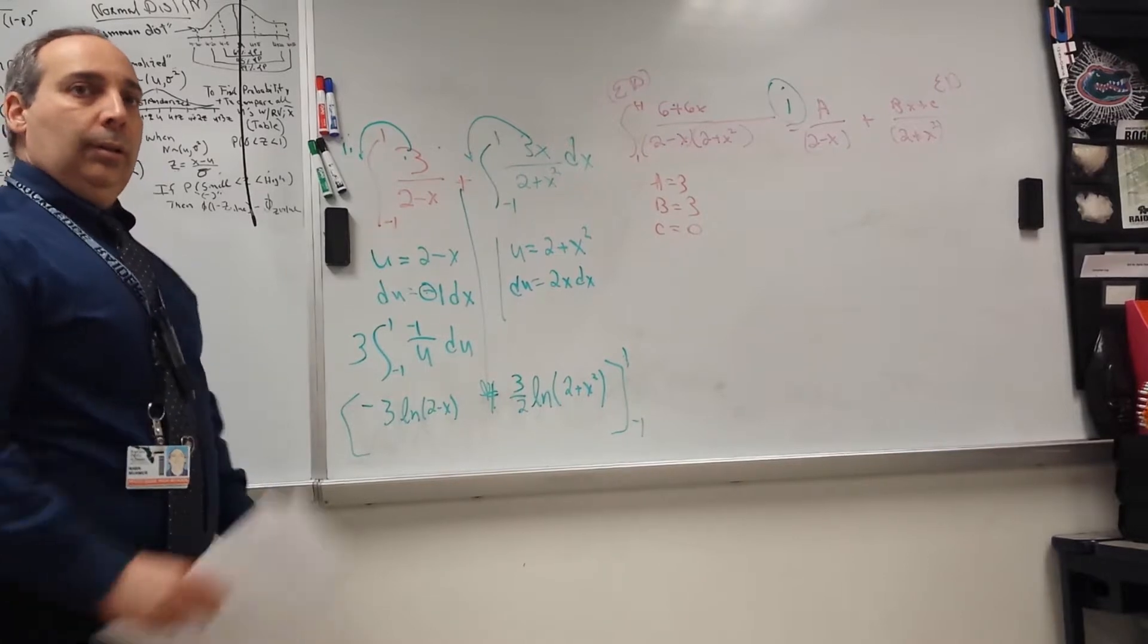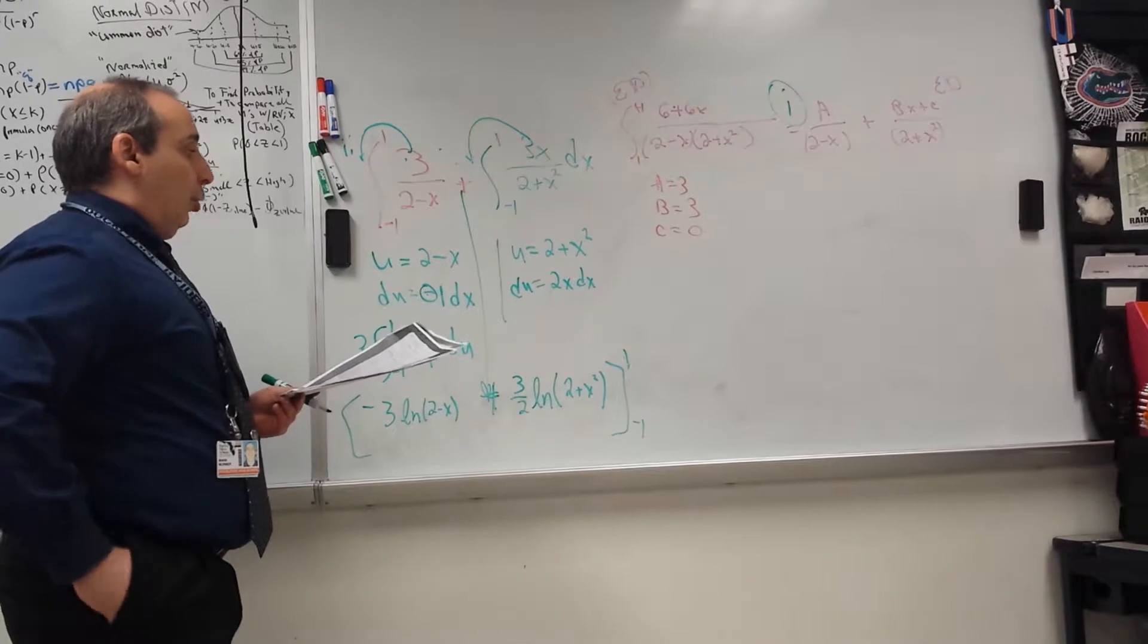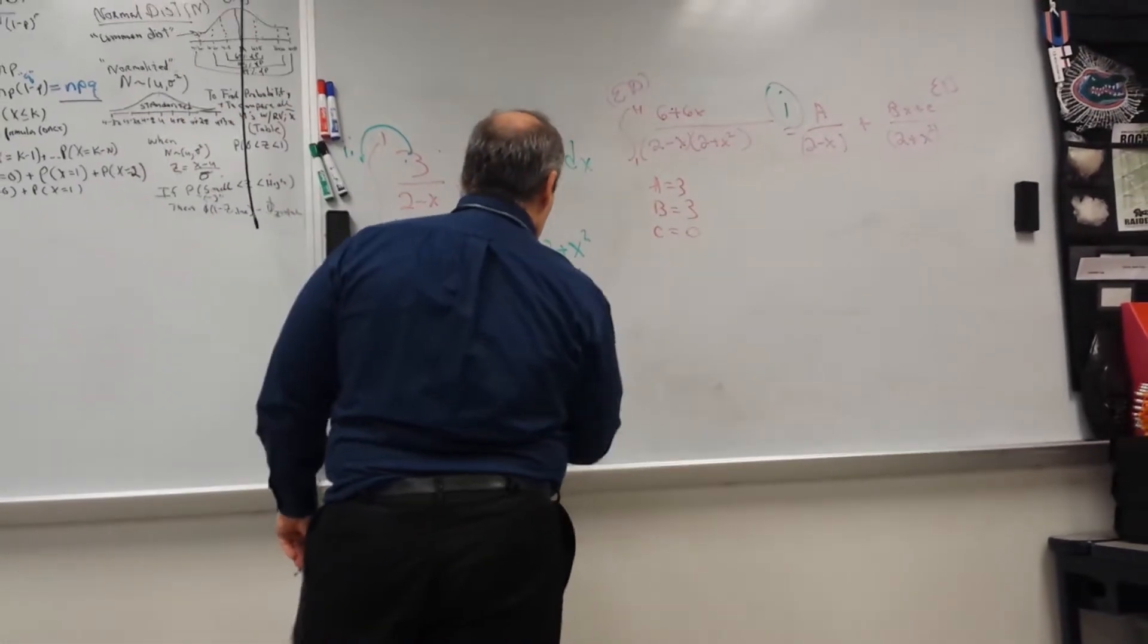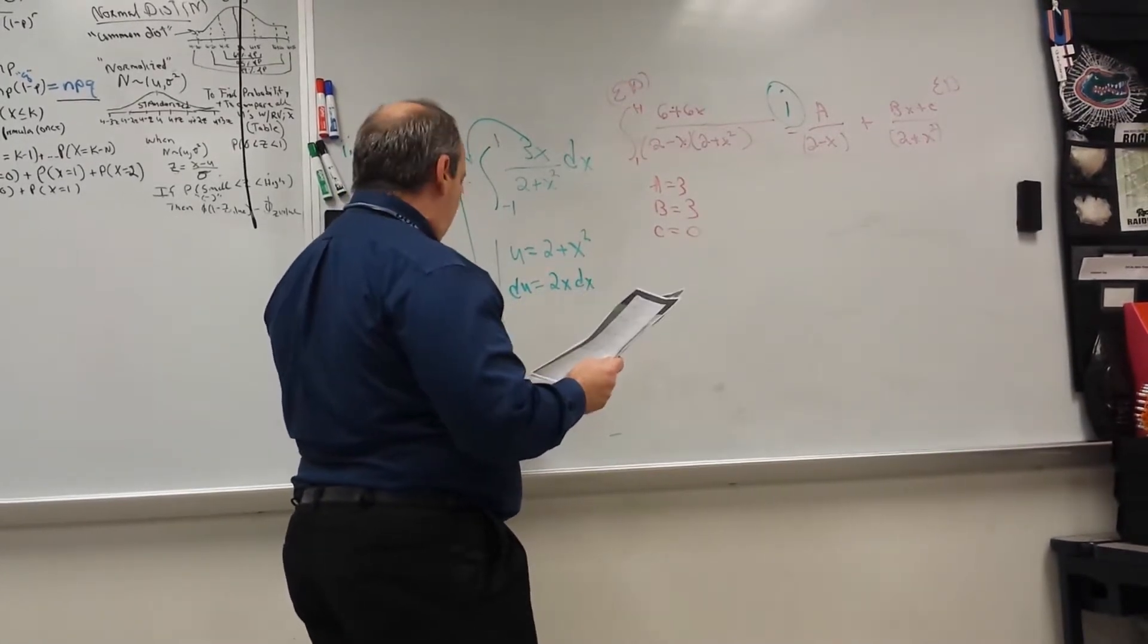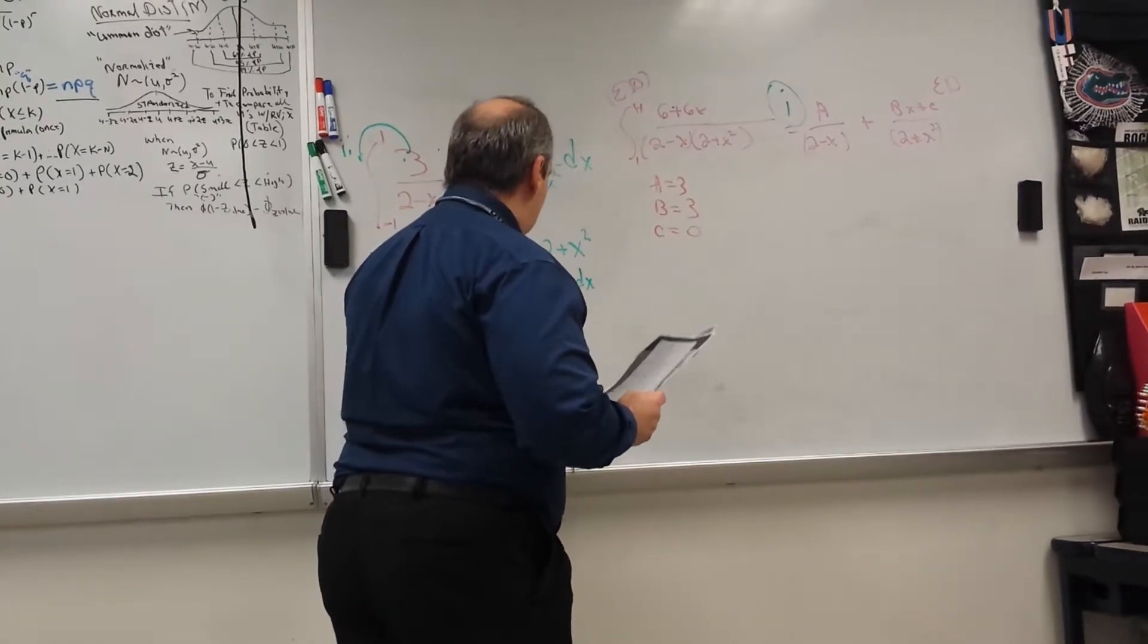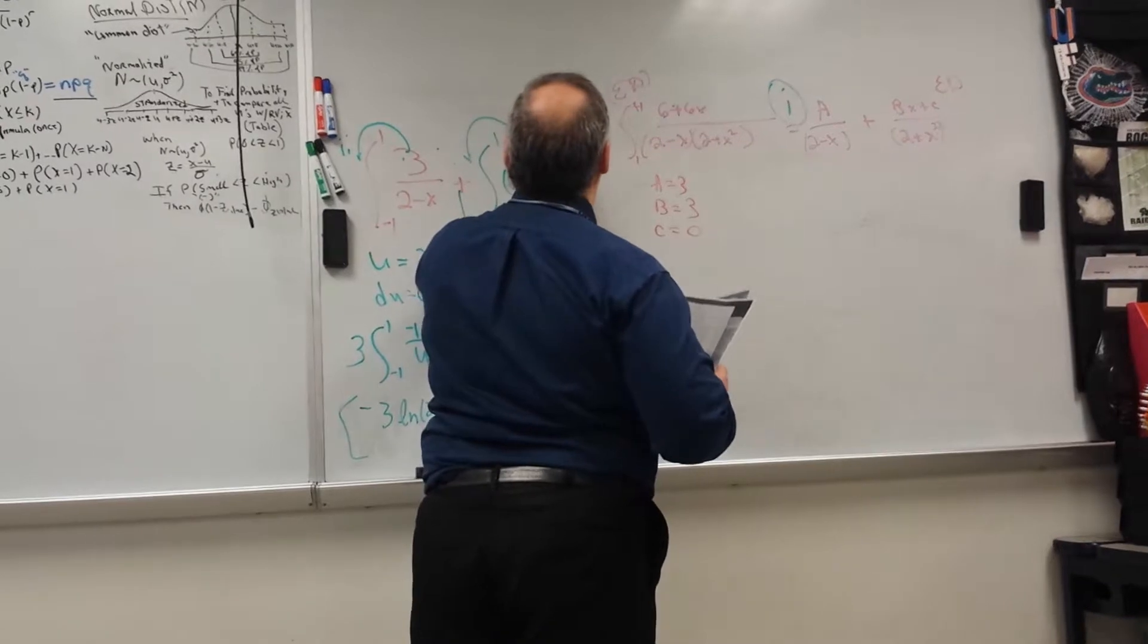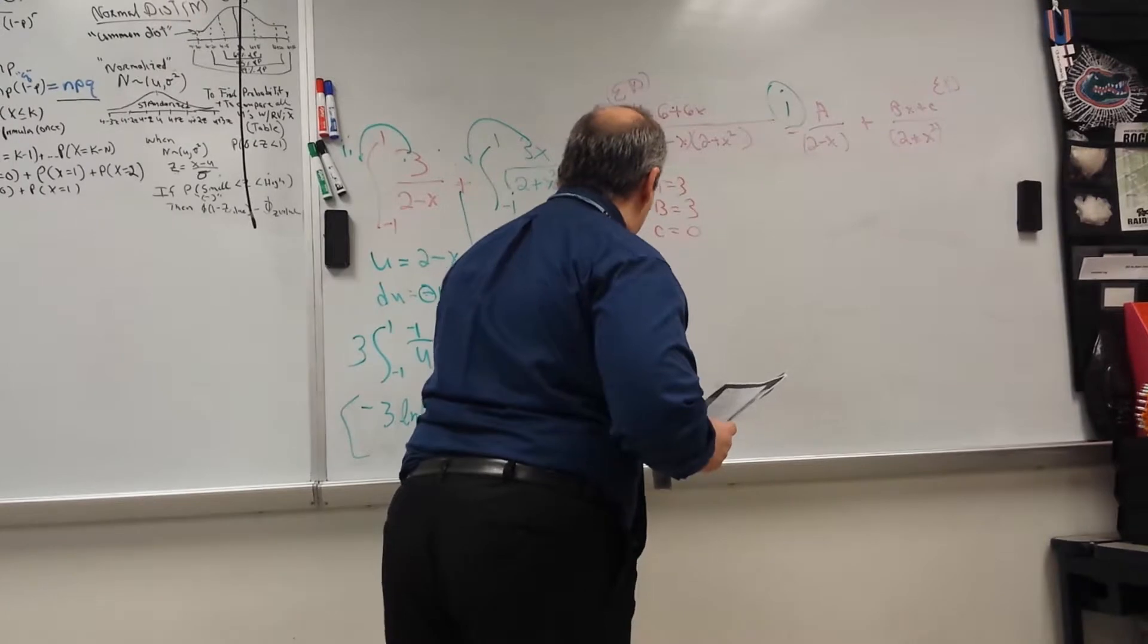So then in this guy right here, you know there's going to be a 3 there, right? So this is going to be plus. And then this 3 comes out, and then there's a 2. So it comes 3 halves. Then the natural log of 1 over u du. So that's going to still be the natural log of 2 plus x squared. Wait a minute. That's squared, right? Yeah, the natural log is because of this one.